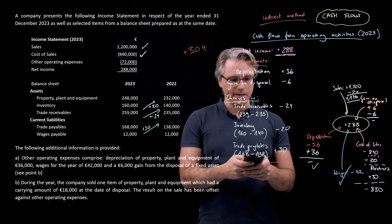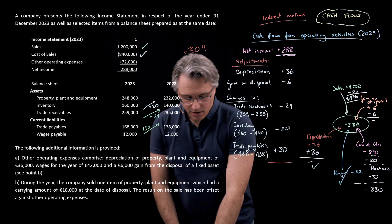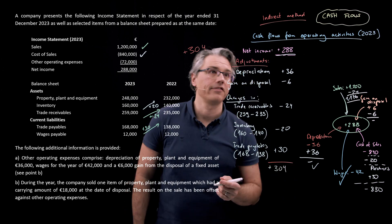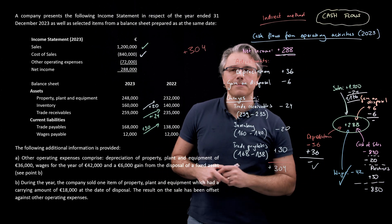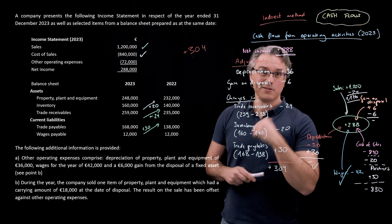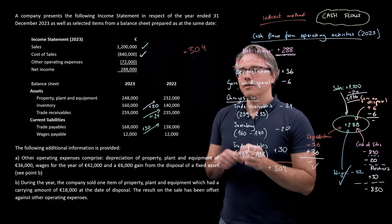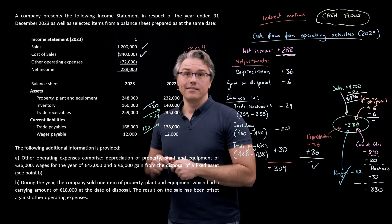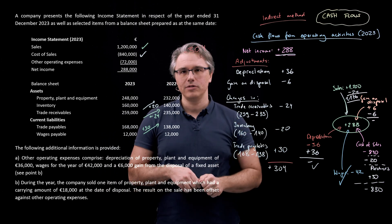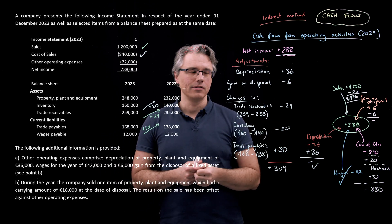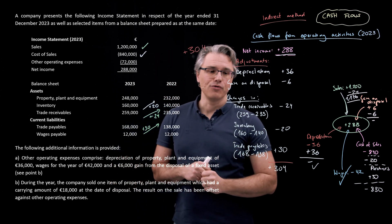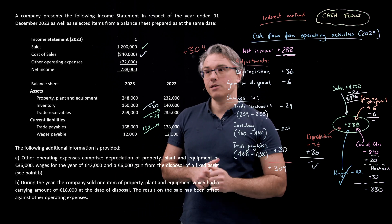Let's see the outcome. Starting with 288, plus 36, minus 6, minus 24, minus 20, plus 30. I can see on my calculator a result of 304,000, which would be my cash flows from operating activities. It's the figure I knew I wanted to arrive at because it's what we computed in the previous video as well.